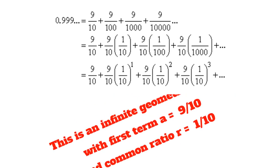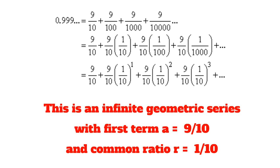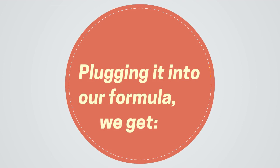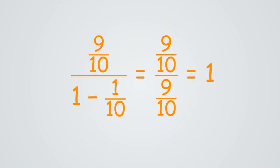This is an infinite geometric sequence with first term a is equal to 9 tenths and the common ratio r is equal to 1 tenths. Plugging it into our formula, we get 9 tenths divided by 1 minus 1 tenths, which further simplifies to 9 tenths divided by 9 tenths, which is obviously 1.